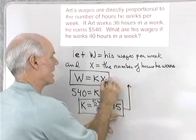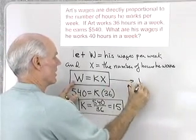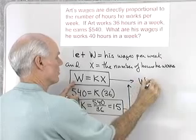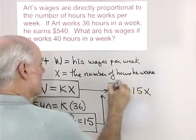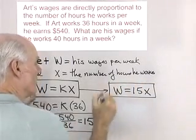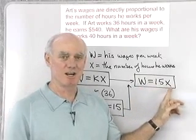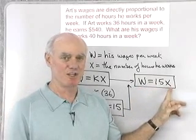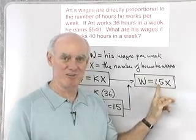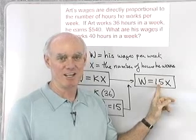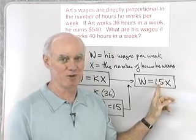K is equal to 15. Substituting that back into the general equation gives W is equal to 15 times X — that's the specific equation. You can see that 15 is his hourly rate; he makes $15 for every hour that he works per week.